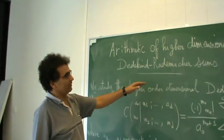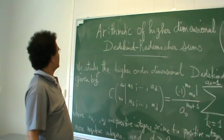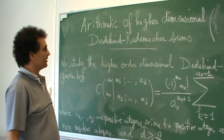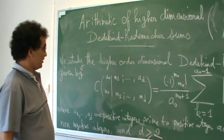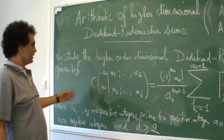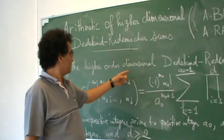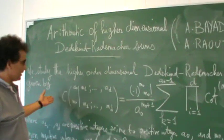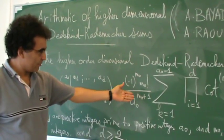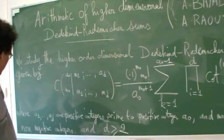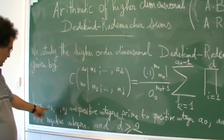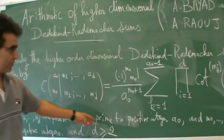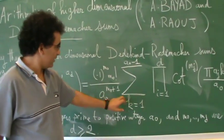I am going to present my work with Rausch on the arithmetic of higher dimensional Dedekind-Rademacher sums. In this paper we study the higher order dimensional Dedekind-Rademacher sums, which are given by this expression, which involves the parameters A1 to AD, which are positive integers prime to the positive integer A0.